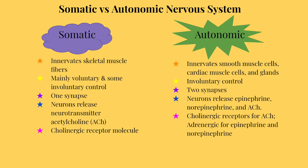Comparing the somatic division to the autonomic division: somatic nerves innervate skeletal muscles and produce voluntary actions, but some involuntary actions as well. Within the somatic division, there is only one synapse before the nerve reaches its target cell. These somatic neurons release acetylcholine as their neurotransmitter, and the somatic division has cholinergic receptors to respond to neurotransmitters.